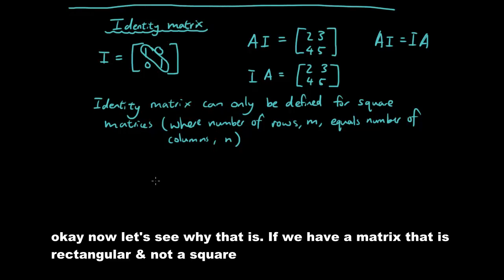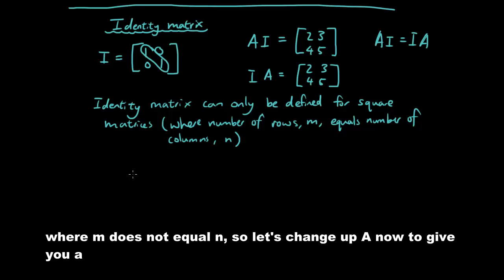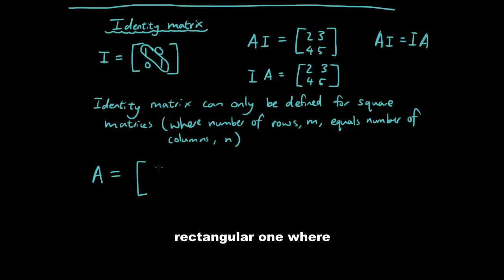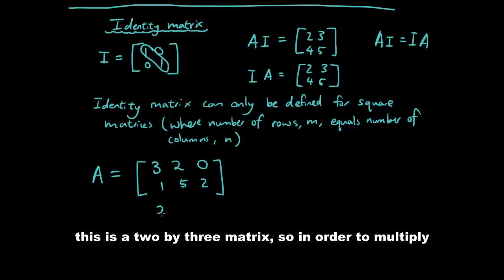And now let's see why that is. So if we have a matrix that is rectangle, or that has M does not equal to N. So let's call it A. Let's change up A now to give you a rectangular one where we got more columns than rows. So I'm going to make it 3, 2, 0, 1, 5, 2. Alright.